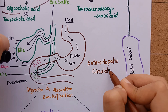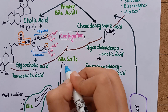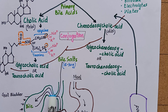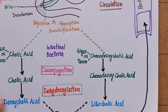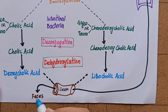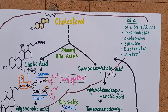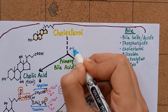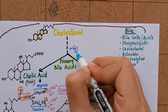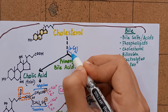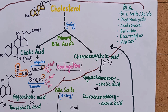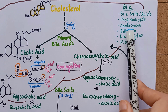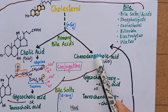Approximately 15 to 30 grams of bile salts are secreted from the liver each day, but only about 0.5 gram is lost in feces per day. The liver synthesizes 0.5 gram per day from cholesterol to replace the lost bile acids. Bile salts provide the only significant mechanism for cholesterol excretion, both as a metabolic product and as a solubilizer of cholesterol in bile.